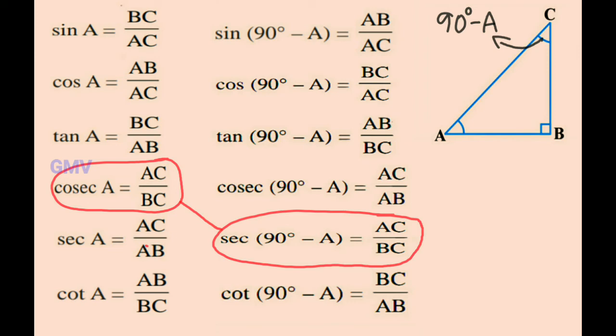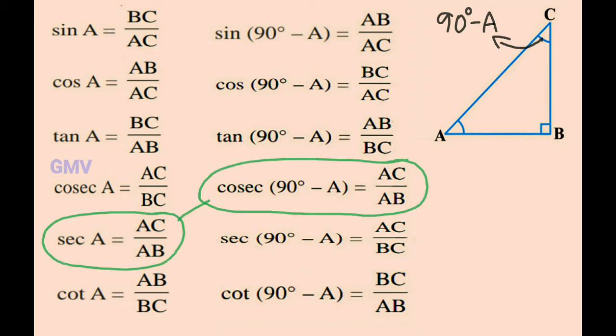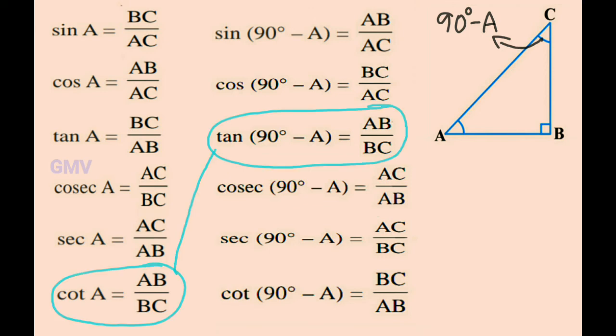The trigonometric ratios of sec A and cosec(90° − A) are equal — that is AC by AB. Hence sec A is equal to cosec(90° − A). The trigonometric ratios of cot A and tan(90° − A) are equal — that is AB by BC. Hence cot A is equal to tan(90° − A).